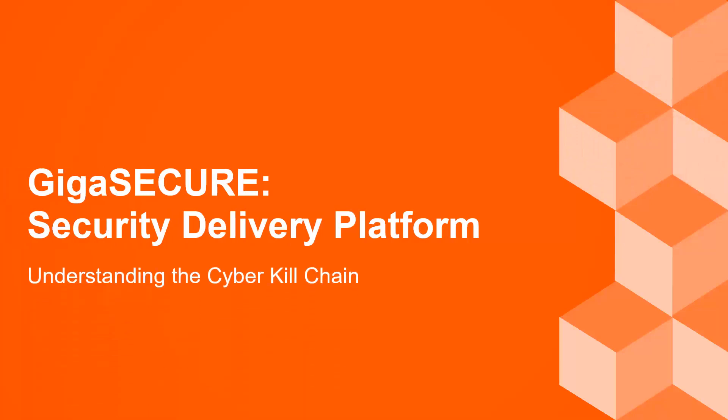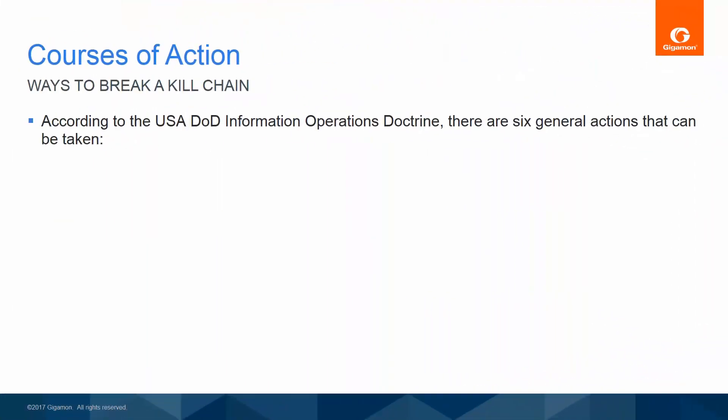Welcome to the module describing the GigaSecure Security Delivery Platform. A kill chain represents a model used to describe the stages of an attack, and which helps to identify where to act to prevent such attacks. The original kill chain models have been criticized as being too intrusion-centric in nature, as they failed to take into account attack vectors such as social engineering and insider attacks. Since professional attackers follow a general process to compromise a network, defenders can utilize a knowledge and understanding of that same process to detect and potentially stop attacks.